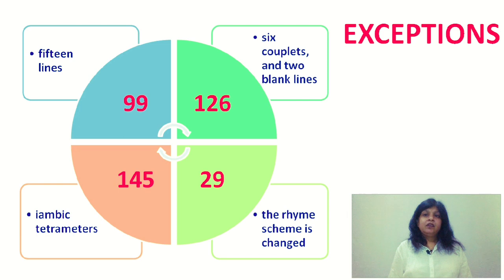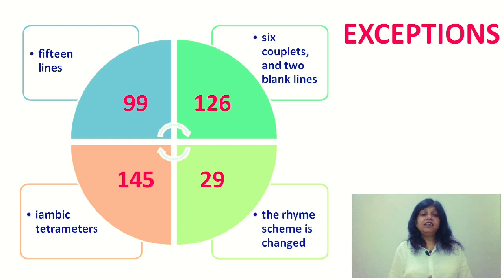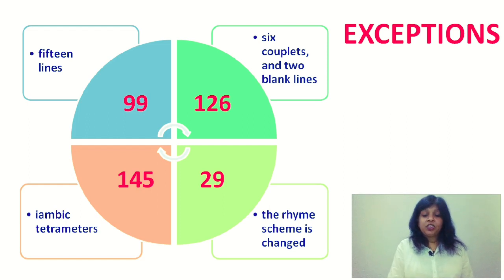There are a few exceptions in his sonnets. Sonnet number 99 has 15 lines, not 14. Sonnet number 126 has 6 couplets and 2 blank lines, so it doesn't follow the standard structure of quatrains and couplet. Sonnet number 145 is written in iambic tetrameter, not iambic pentameter. And sonnet number 29 doesn't follow the rhyme scheme which Shakespeare popularized.